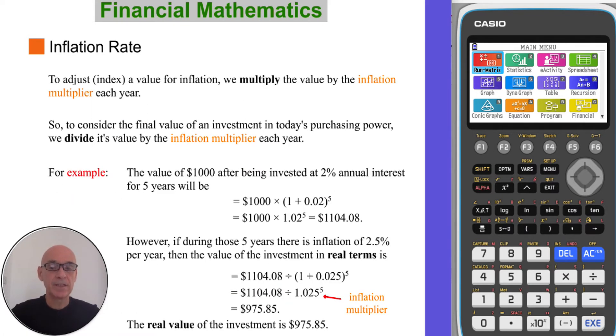To adjust, or index, a value for inflation, we multiply that value by the inflation multiplier each year. So to consider the final value of an investment in today's purchasing power, we divide its value by the inflation multiplier each year.